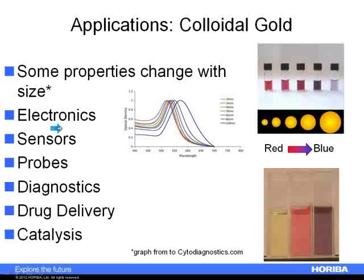Gold is used in all kinds of applications. In electronics, gold nanoparticles are used as conductors in various ways. Colloidal gold is used as colorimetric sensors and in food safety. Since gold particles scatter light, they can be used for dark field microscopy or transmission electron microscopy. Gold nanoparticles are also used in diagnostic tests, drug delivery — where the surface is modified to target specific cells — and in catalysis, where the surface can be used for selective oxidation or reduction. There's also a lot of research on gold nanoparticles in fuel cells.